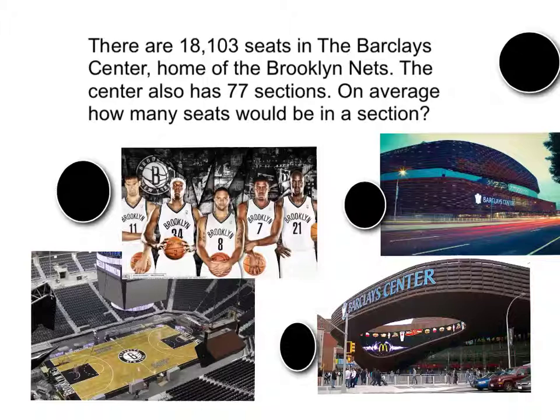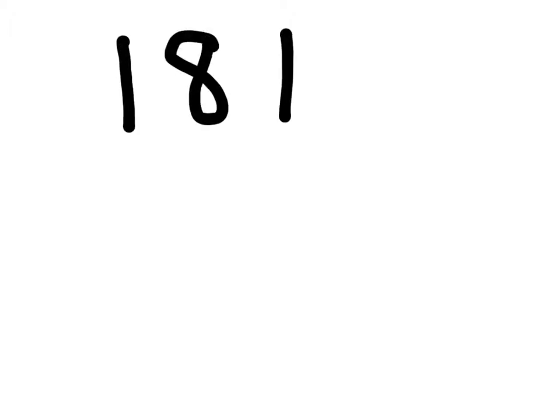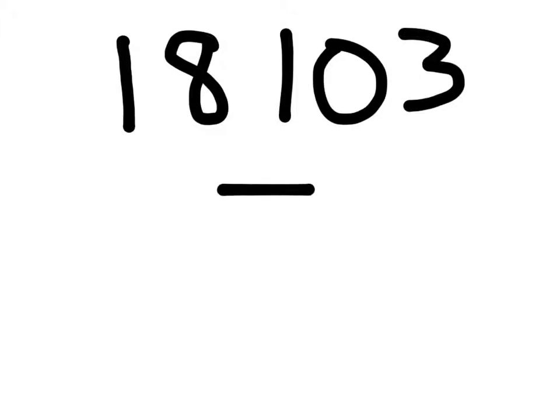There are 18,103 seats in the Barclays Center, home of the Brooklyn Nets. The center also has 77 sections. On average, how many seats would be in a section? The problem we are solving is 18,103 divided by 77.